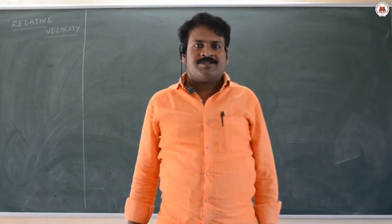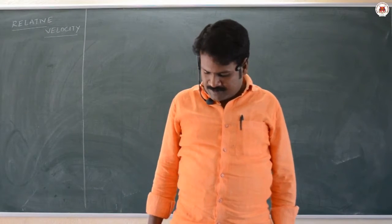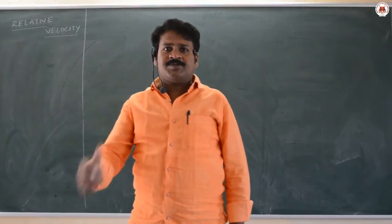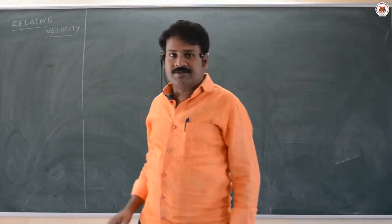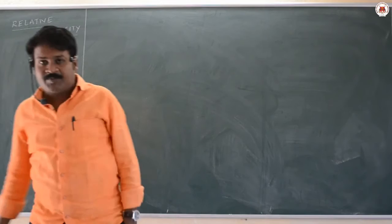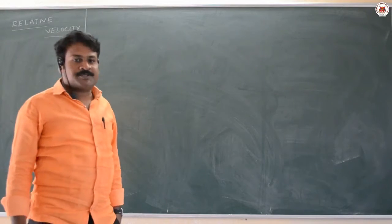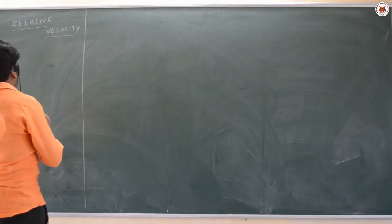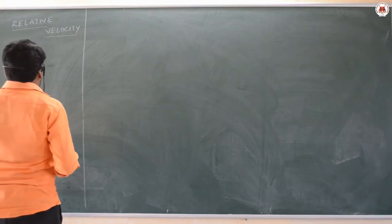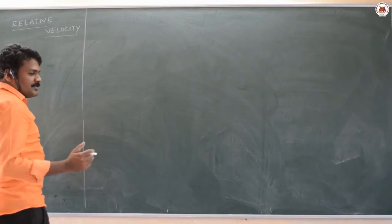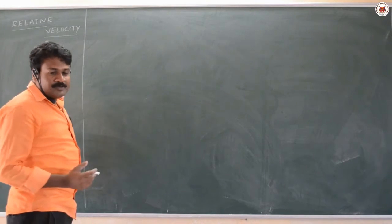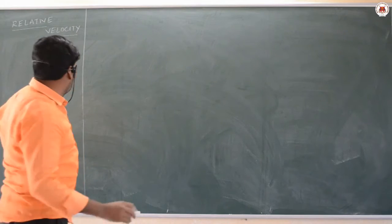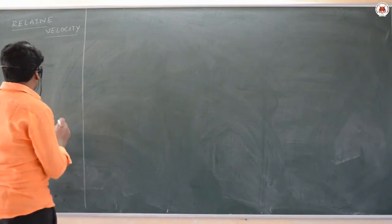Hello everyone, welcome to Royal Palace online classes. Today let us discuss the application of subtraction of vectors: relative velocity. Relative velocity indicates the velocity of a body with respect to another body — that is, the calculation of the velocity of one body with respect to another.